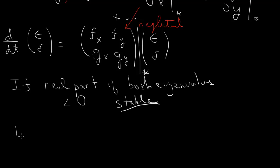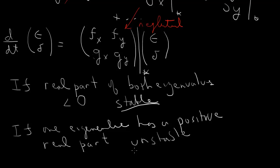On the other hand, if one eigenvalue has a positive real part, meaning greater than 0, then it's unstable. Because along that eigenvector, the solution will grow.